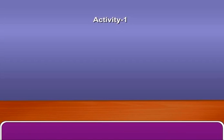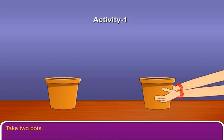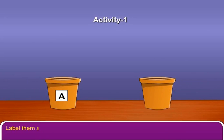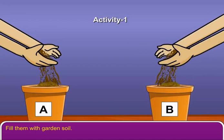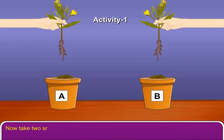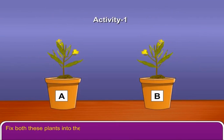Let us perform an activity. Take two pots. Label them as A and B. Fill them with garden soil. Now take two small plants of same form and size. Cut off the roots of one plant only. Fix both these plants into the pots.